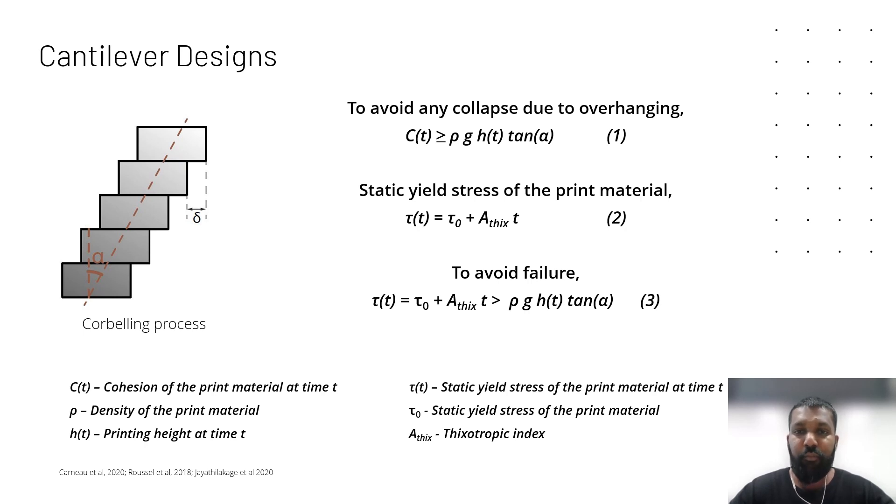Now we have developed ultra high performance concrete. Let's dive into complex geometries. It's a simple theory slide just to look at the basics of cantilever designs. We used a simple corbeling process where the sum of local cantilevers lead to the overall cantilever. To avoid any overhanging, the cohesion of the concrete should satisfy equation 1, where ρ is the density of the material, g is the gravitational acceleration, h(t) is the height with time which depends on the printing speed, and α is the overhanging angle.